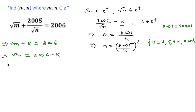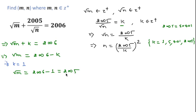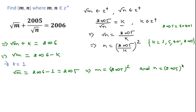If k equal to 1, then square root of m equal to 2006 minus 1, which is equal to 2005. If we square both sides then we get m equal to 2005². And putting k equal to 1 in the expression for n, we also get n equal to 2005².